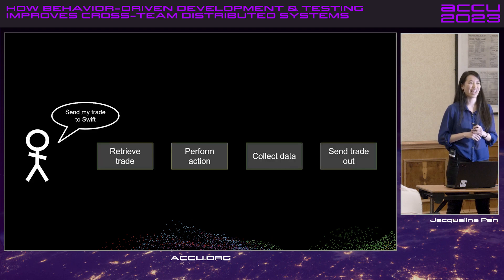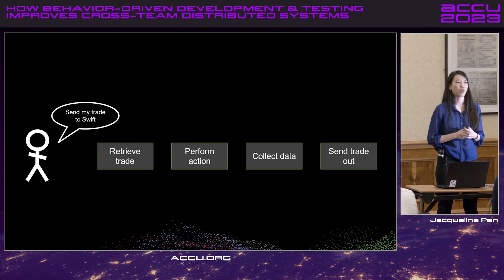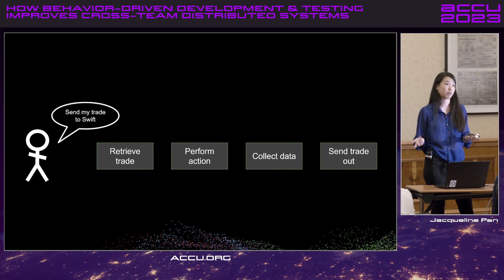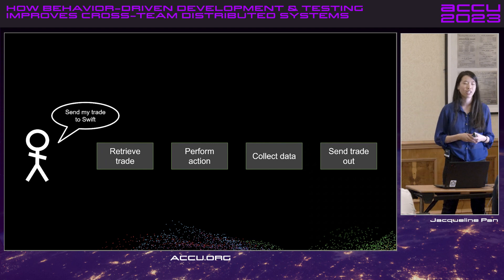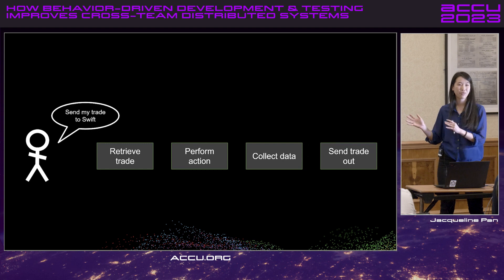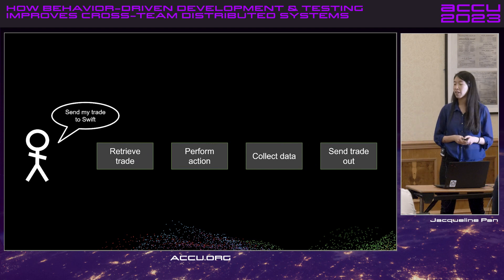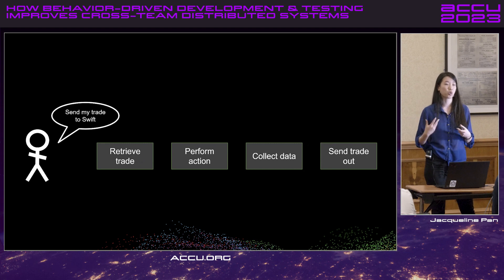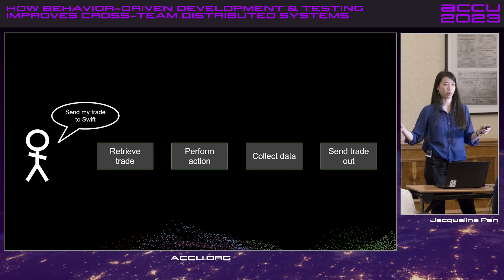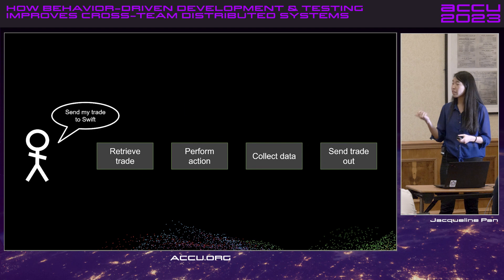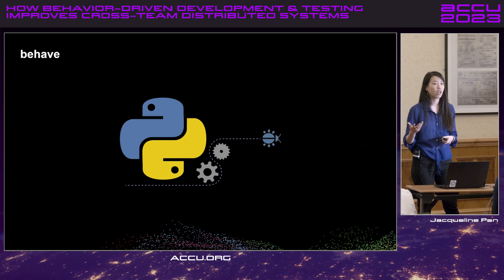I know we're at ACCU so probably everyone's hearing a lot about C and C++. A lot of our services are written in C and C++ for performance and low latency needs. But actually, we use Python to test our end-to-end workflows. The reason why we use Python is because it gives a lot of tools out of the box that make it really easy to build those building blocks to test that end-to-end client workflow.